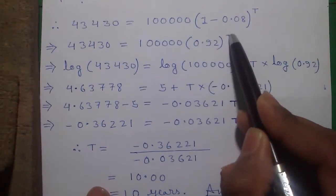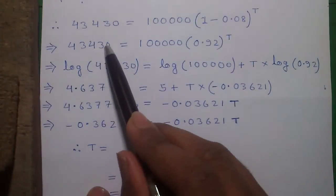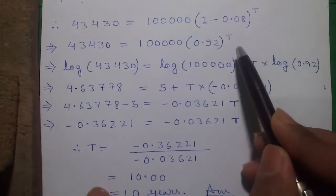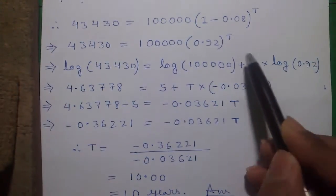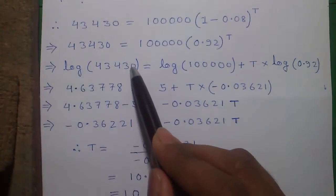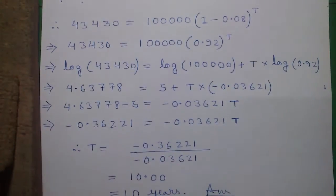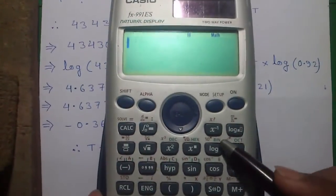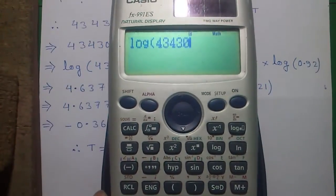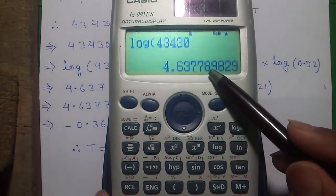To remove this to the power, we have to take log of both the sides. So log of 43,430 equals to log of 1 lakh plus T into log of 0.92. So log of 43,430 is 4.63778. Press log of 43,430 and press equals to which is 4.63778.